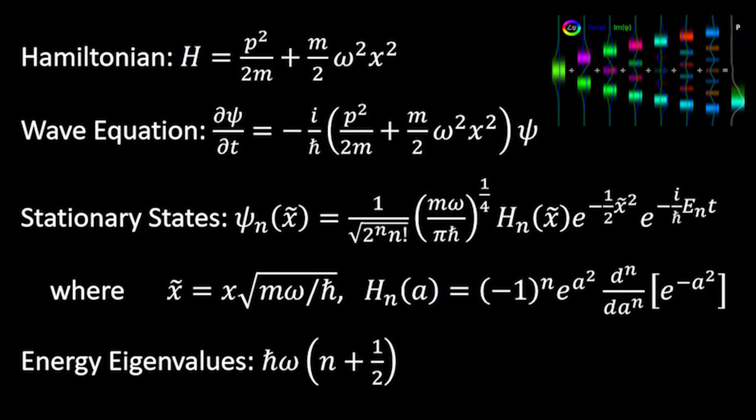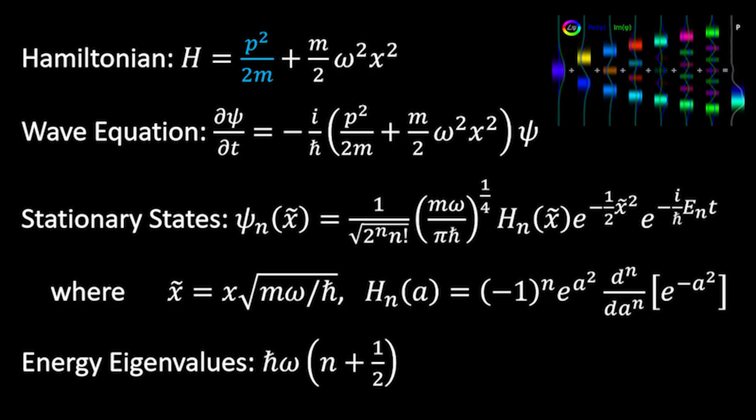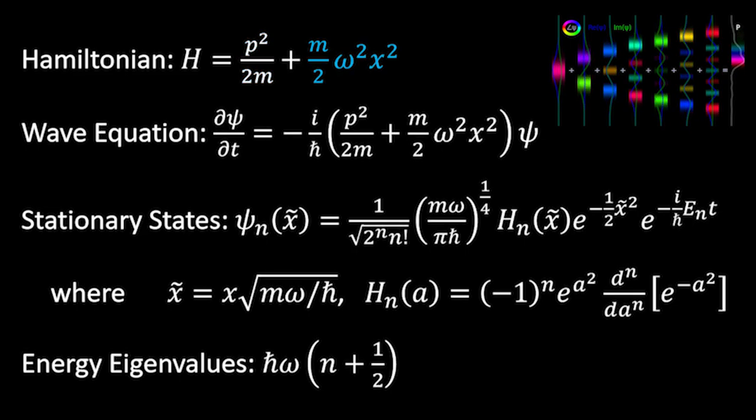First, starting off with our Hamiltonian, which tells us the energy of the system when applied to the wave function, we notice the usual kinetic energy term, which is half the particle's momentum squared divided by its mass. Now, keep in mind the momentum is sort of this differential operator when you apply it to the wave function. Now, we also see a term in the potential energy due to the spring-like force, where m is mass, omega is angular frequency, and x is the distance from equilibrium.